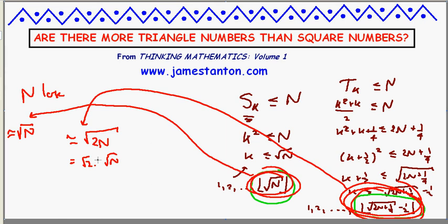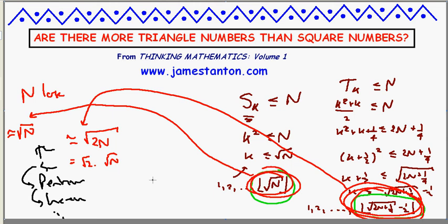Now of course the Greeks didn't just stop at square and triangular numbers — they also talked about pentagonal numbers and hexagonal numbers and so on. So I guess my next question is: if there are root 2 more triangular numbers than square numbers, then how many more square numbers are there than pentagonal numbers, and how many more pentagonal numbers are there than hexagonal numbers? Sounds like a fun little research project. Alright, thanks very much.